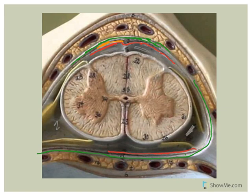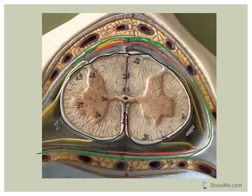All of the space in between the arachnoid mater and the inner layer is the subarachnoid space. The white layer highlighted in black is the pia mater. This lab model does not show denticulate ligaments, but I can show you the ventral root and the dorsal root — the denticulate ligaments would be located right between those two structures.